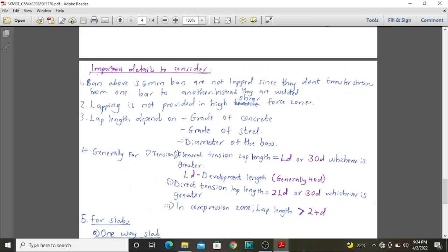Secondly, lapping is always not provided in regions with high shear force. Therefore, please determine your region whether it has high shear force and these regions should not have a lapping of your bars. For instance, if we are doing a raft or ground beams and we have high punching shear of a column, we are not supposed to lap our bars in these zones.